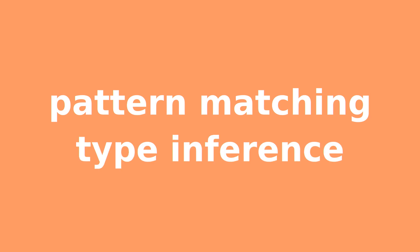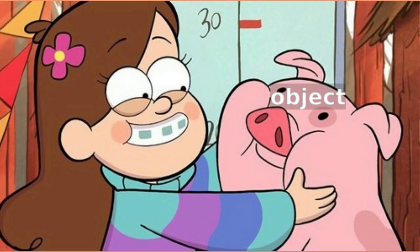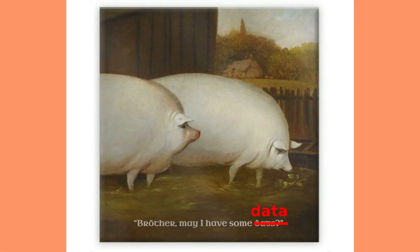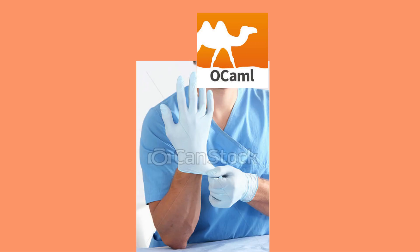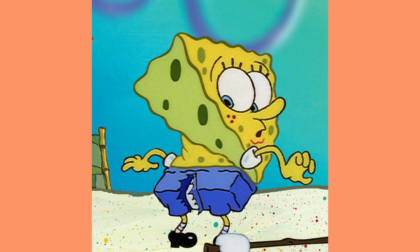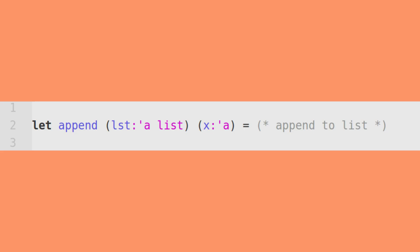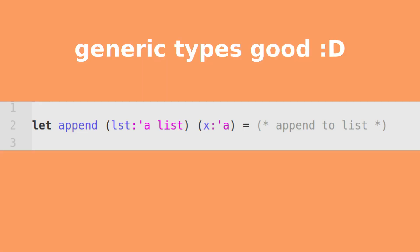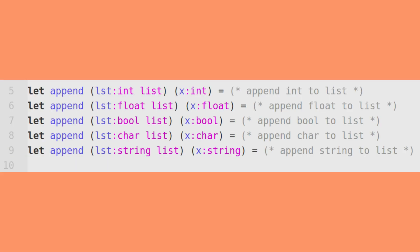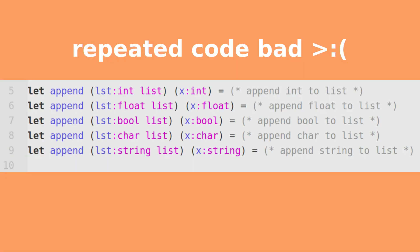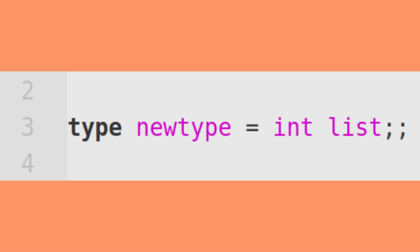OCaml is known for its pattern matching and type inference. Instead of having an object and accessing its fields by asking nicely, OCaml puts on latex gloves and rips that sucker open because it does what it wants. Type inference lets you use generic types so you don't have to rewrite lists for every custom type you come up with. Also, you can easily make custom types.